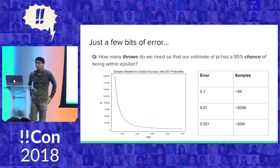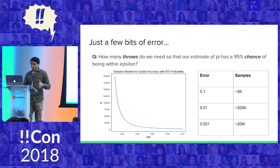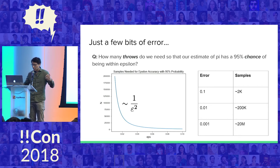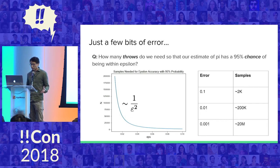If you like pictures, this is the scaling of how the number of samples we need grows with epsilon. The y-axis is n, the number of darts we need to throw, and the x-axis is epsilon. The scaling turns out to be something like 1 over epsilon squared. I'm not going to convince you why this is the correct asymptotic scaling, but it's pretty close.